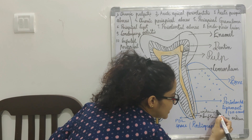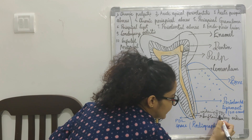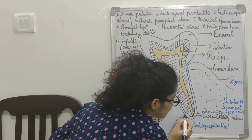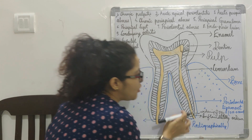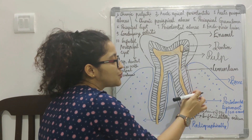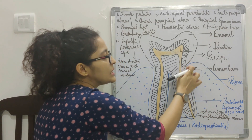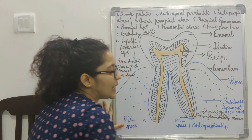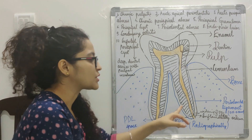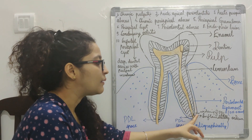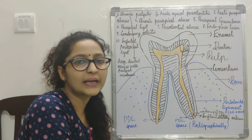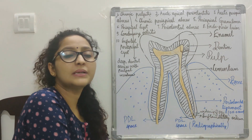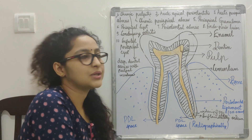When this fluid collection begins, you see widening of the periodontal ligament space. You can also see loss of lamina dura — the radiopaque line seen between the periodontal ligament and the bone. So there can be widening of periodontal ligament space with or without loss of lamina dura in acute apical periodontitis.